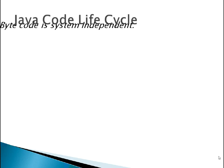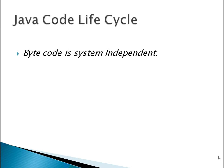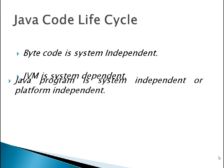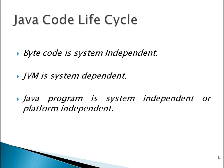So we can say bytecode is system independent — it can be created on any system using predefined 200 instructions. JVM is system dependent. Java program is system independent. For example, if we write a .java program on X processor and Y operating system, then that program is executable on any other computer system with any processor and operating system. This means Java programs are system independent or platform independent.